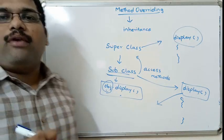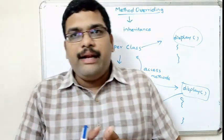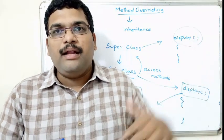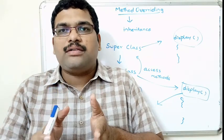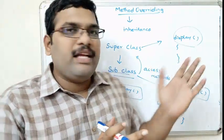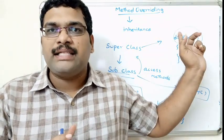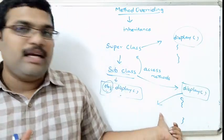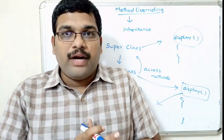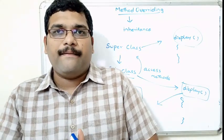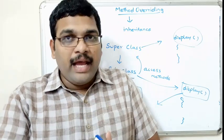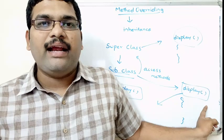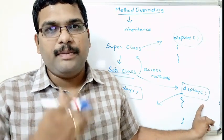Now the question is: why do we need overriding? In inheritance, the child can access the method written in the superclass. But if the child is not satisfied with the implementation of that particular method, the child can override the same method in the child class and rewrite it according to its own needs.